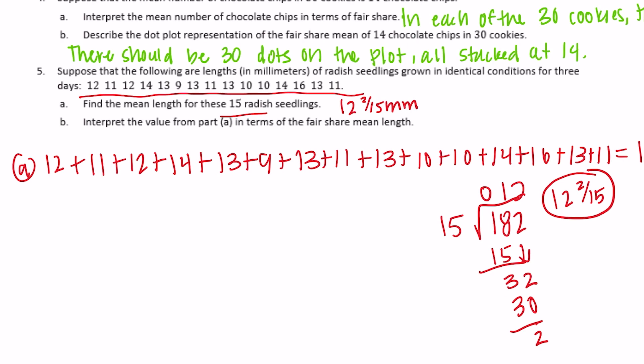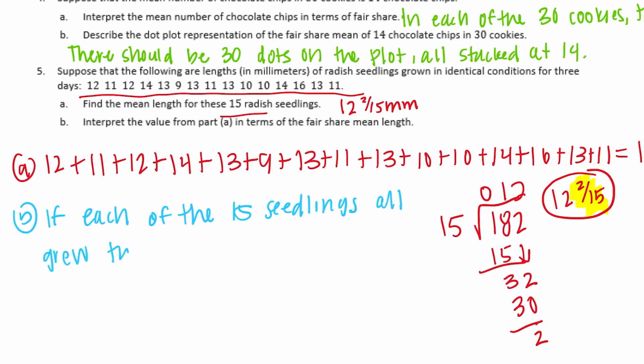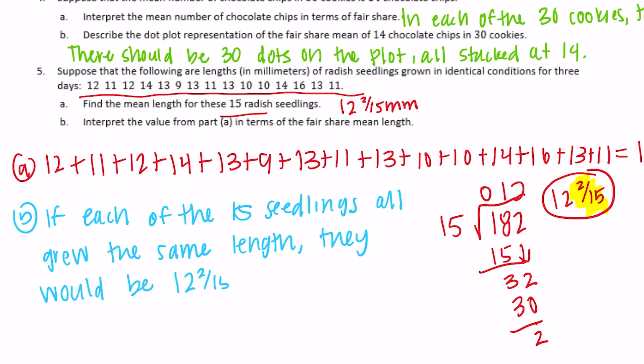You would have gotten the same thing using the fair share method, but it gets really complicated once you start trying to share pieces among 15. That's why we have this formula — it gets us straight to the answer. For part b, interpret the value in terms of fair share mean length: if each of the 15 seedlings all grew the same length, they would each be 12 and 2/15 millimeters long.